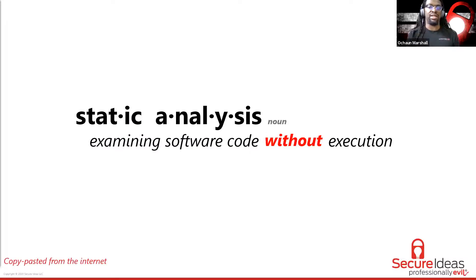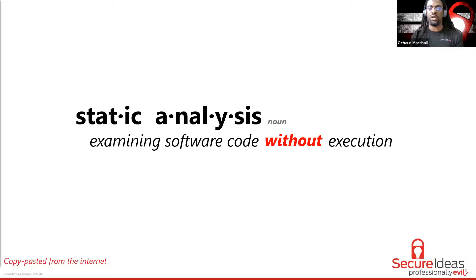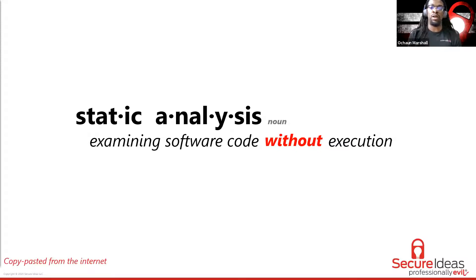Here's the basic definition of static analysis for the uninitiated. The whole point of what we're going through with static analysis is getting as much information as we can glean from the source code without executing it, without running it, and without doing dynamic analysis. So what information can we glean from just examining the structure of the source code itself? In a security context, we're looking for things that compromise the confidentiality, integrity, or the availability of a given system.